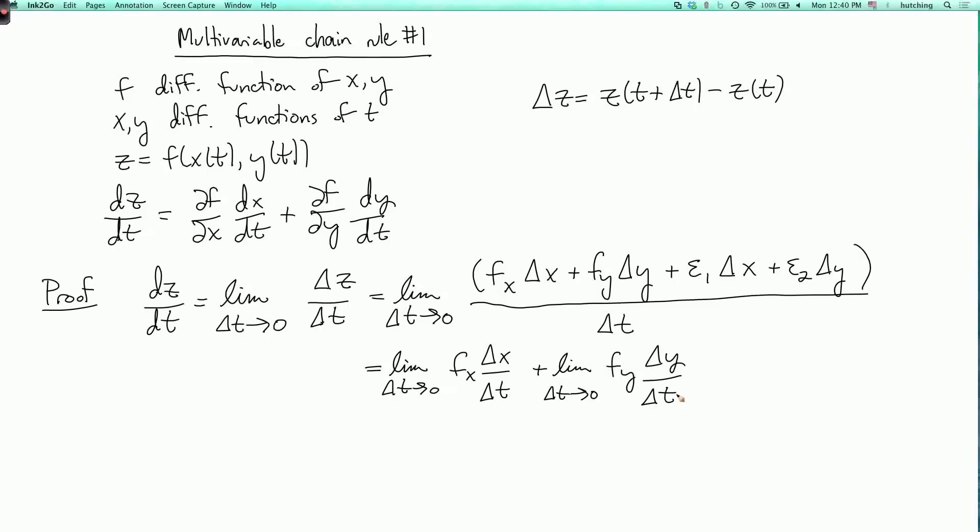And then as delta t goes to zero, delta x over delta t goes to the derivative of x with respect to t, and delta y over delta t goes to the derivative of y with respect to t. So this is fx dx dt plus fy dy dt. So that's the proof.